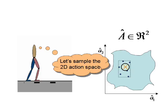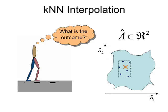Given a 2D action, we use KNN interpolation to predict quantities such as the resulting state and step length.